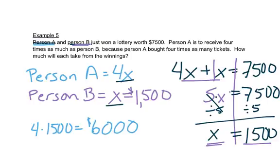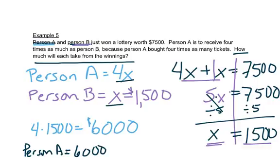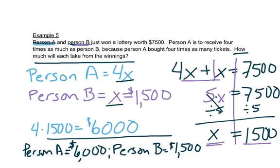The question says, we have to make sure we answer the question. The question says how much will each take from the winnings? So person A will get $6,000 and person B will get $1,500. Those two together are our answer.